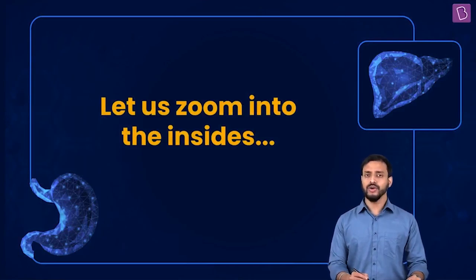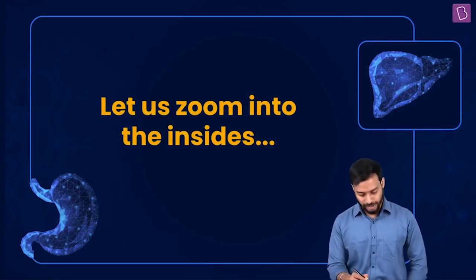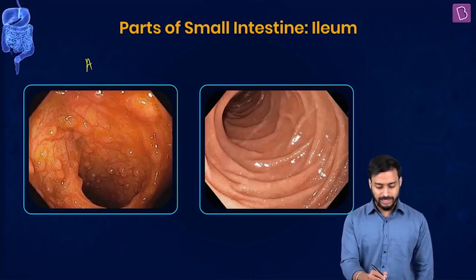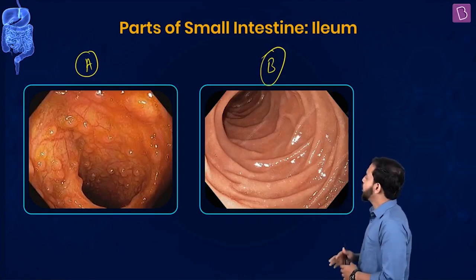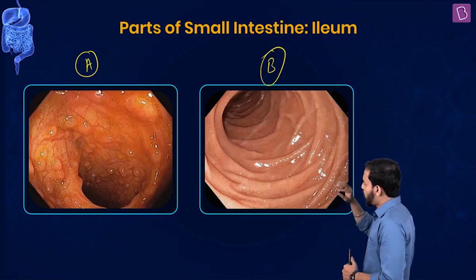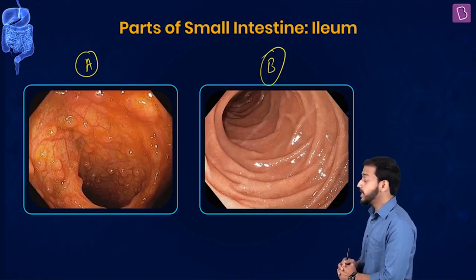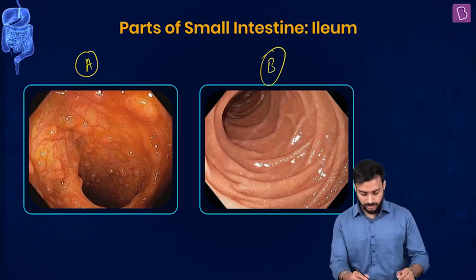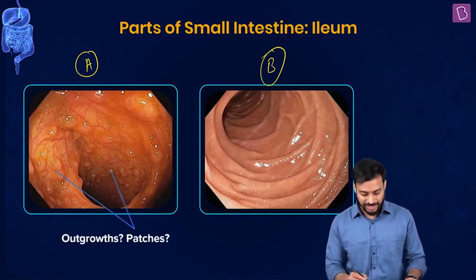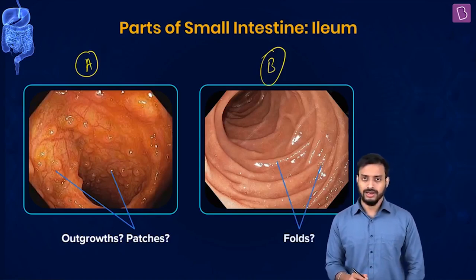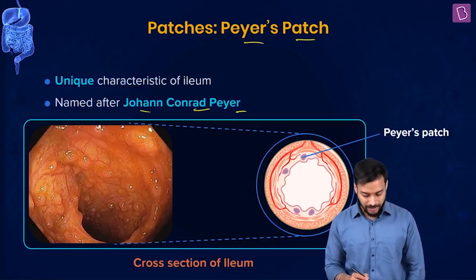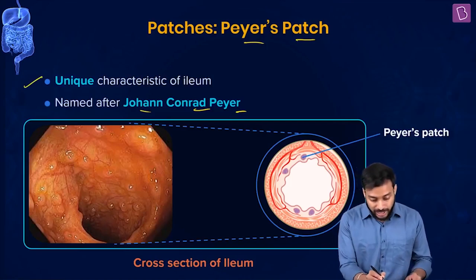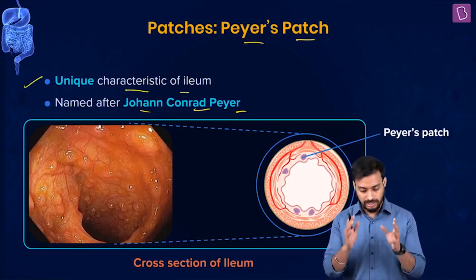We're zooming into the small intestine to look at differences. Image A shows something patchy with bumps, while Image B shows folds. The patches are called Peyer's patches, named after Johann Conrad Peyer. These are a unique characteristic of the ileum in the small intestine.